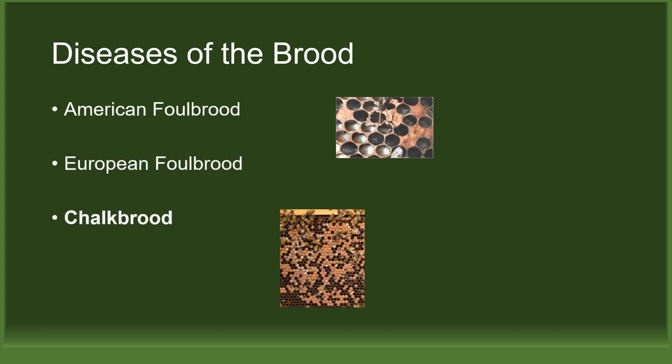The next brood disease is chalkbrood, caused by a fungus. The symptoms are dead larvae that turn white at first and then black. You may also see them being cleaned out of the front of the hive. Chalkbrood usually clears up by itself in the summer heat. The best practice for preventing chalkbrood is to replace brood frames every three to five years.